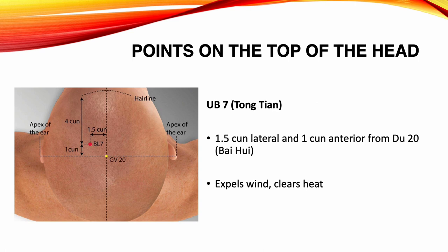Urinary Bladder 7. Location: 1.5 Sun lateral, and 1 Sun anterior from Du 20. Functions: expels wind, clears heat. Indications: headache, dizziness, nasal congestion, nose bleeds, deviation of the mouth and eye, paralysis.